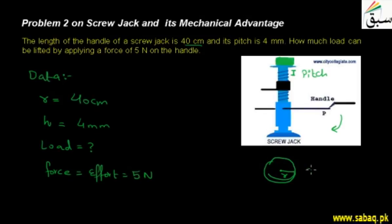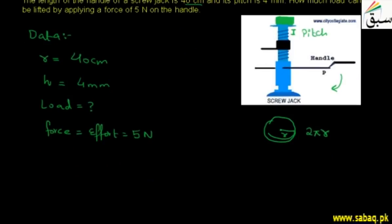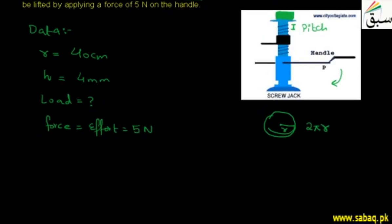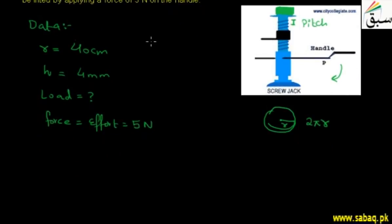then it will be the distance that will be 2πR. It will be the radius of the circle. Because we are using the circular motion. Now this is a thing that we will get to understand.